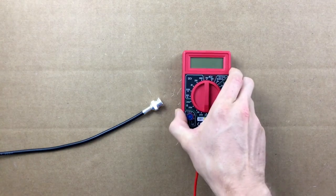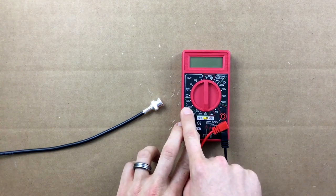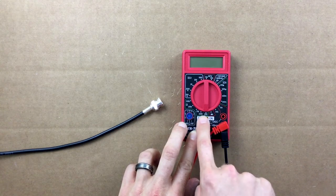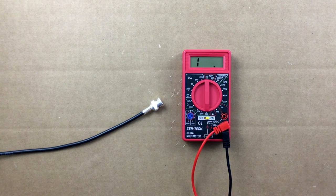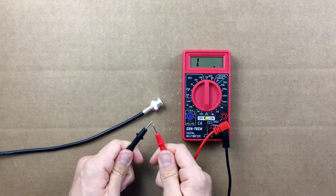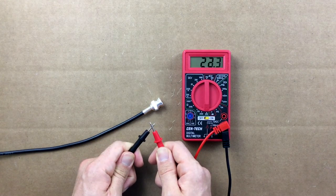Grab an ohmmeter and set it to the lowest ohm scale. Touch the two leads together and it will show you little to no resistance. This is what you do not want to see in your installation.